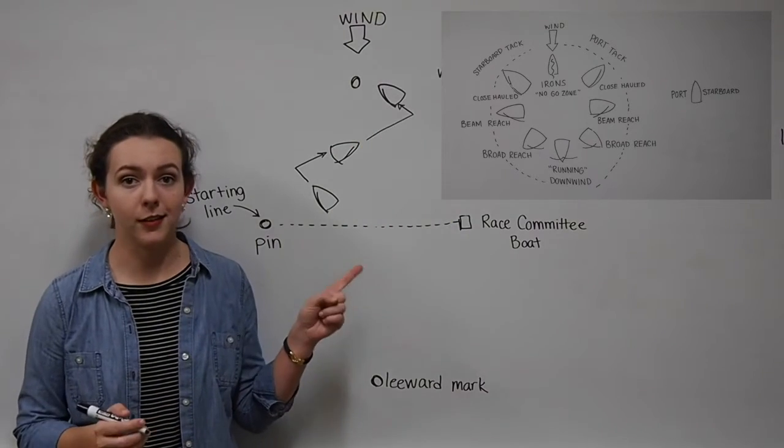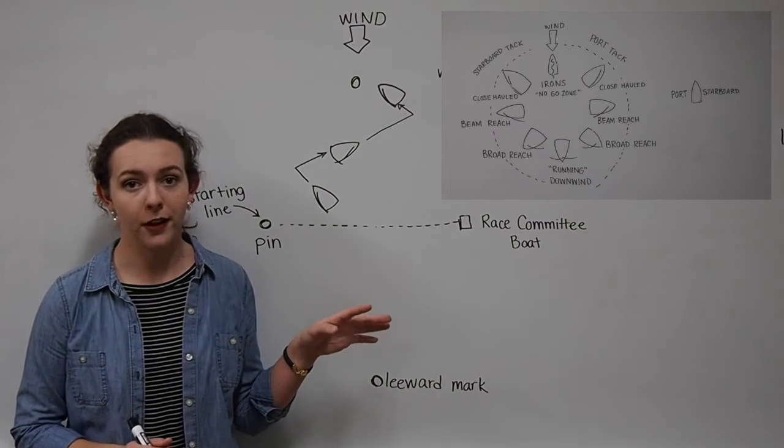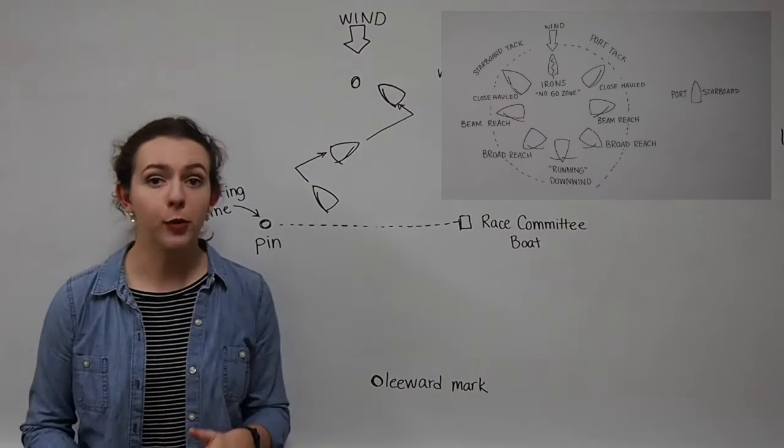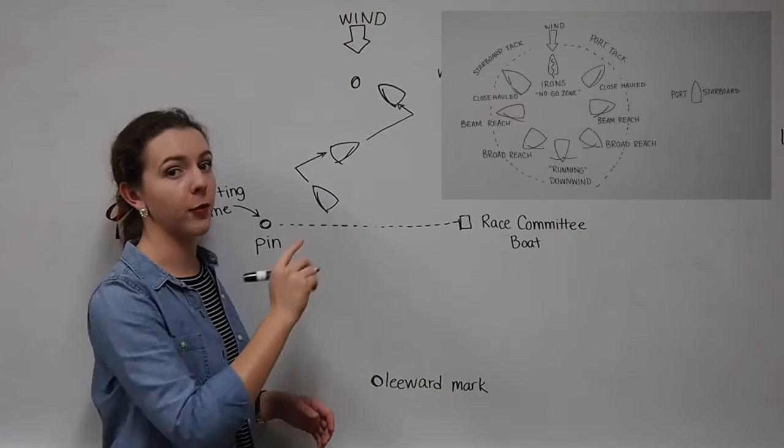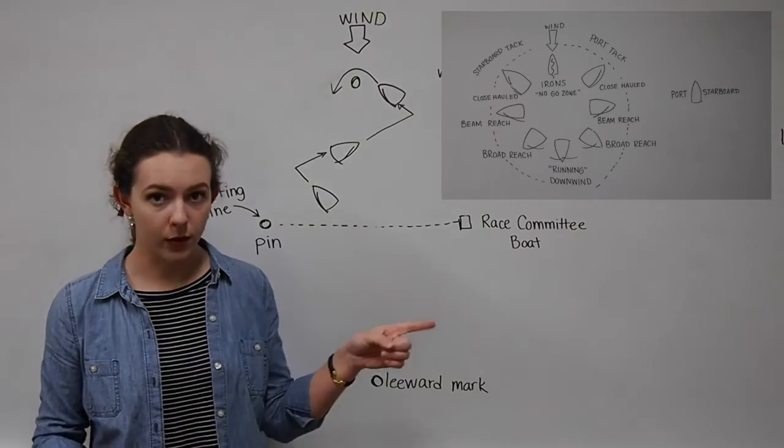So this is the zigzag pattern that will take place on your way to your windward mark. And then as you're approaching the windward mark, you need to keep in mind that the boat needs to round from the right to the left. So you're going to leave the mark to port.